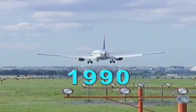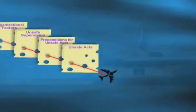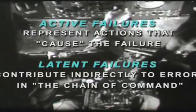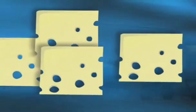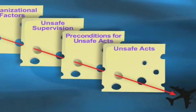In 1990, British psychologist James Reason expanded and updated the domino theory of error, calling it the Swiss cheese model. Reason was able to categorize active and latent failures that can occur and interact in any given situation. Active failures represent actions that cause the failure, whereas latent failures contribute indirectly to errors in the chain of command. While hopefully there are several safeguards in place, like Swiss cheese, there are holes in even the best laid plans. However, if the holes become aligned — indicating a breakdown in safeguards — an accident is likely to result.